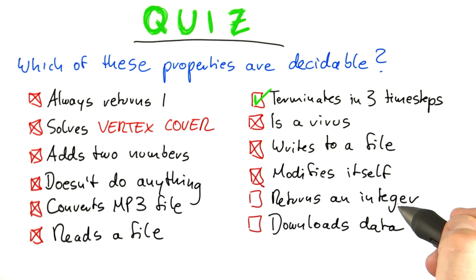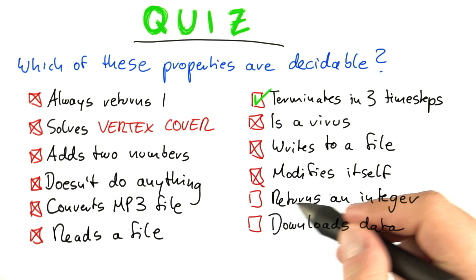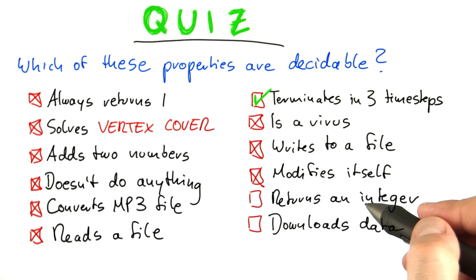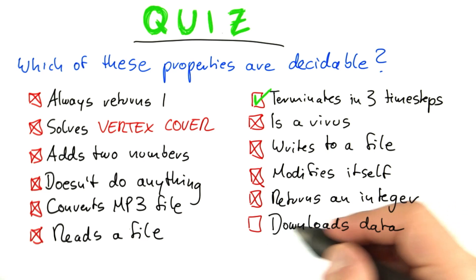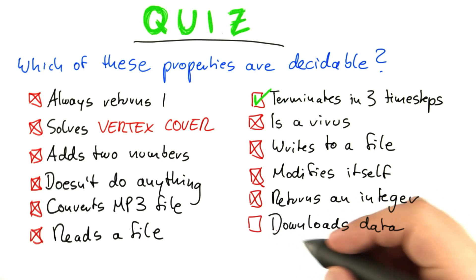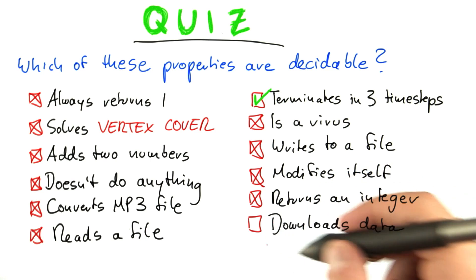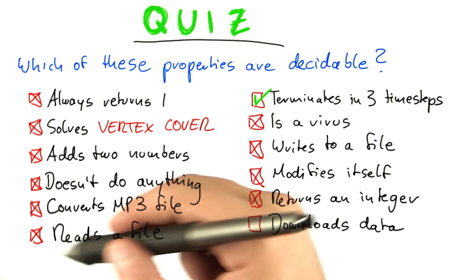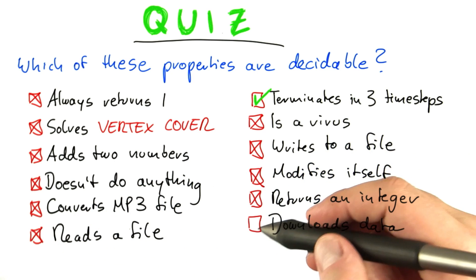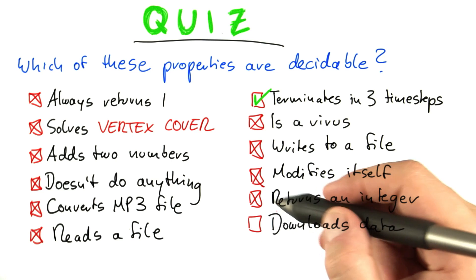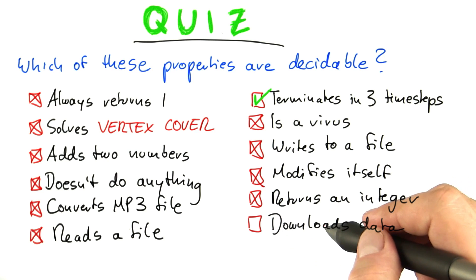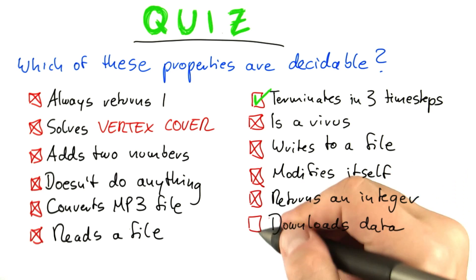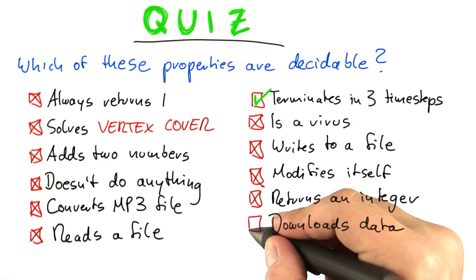Similarly, you can look at a program and ask: does it return integers? But if you had a program that could decide whether another program only returns integers, that would again allow you to solve the halting problem. The same thing applies to downloading data — I could modify any program so that it runs on its own data and downloads data to signify it's done. If I could decide this in the general case, I would also have solved the halting problem.